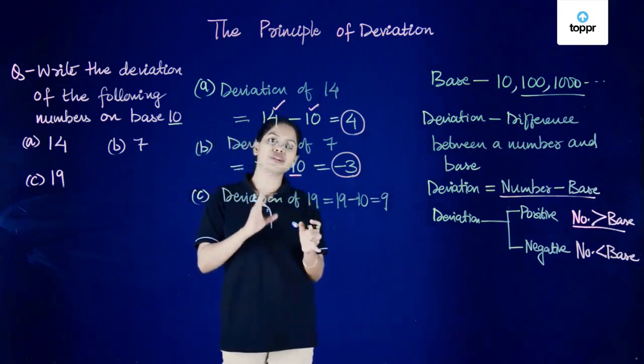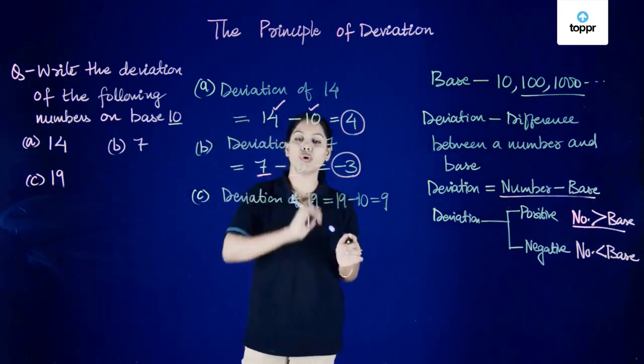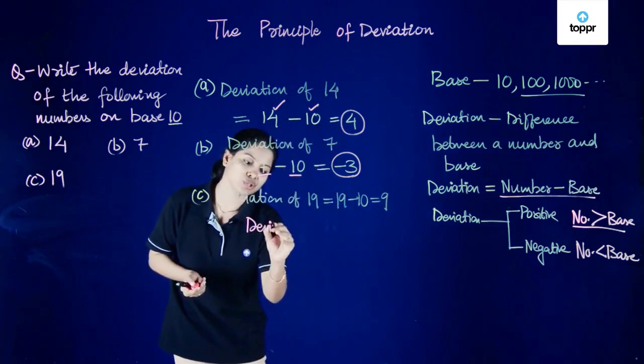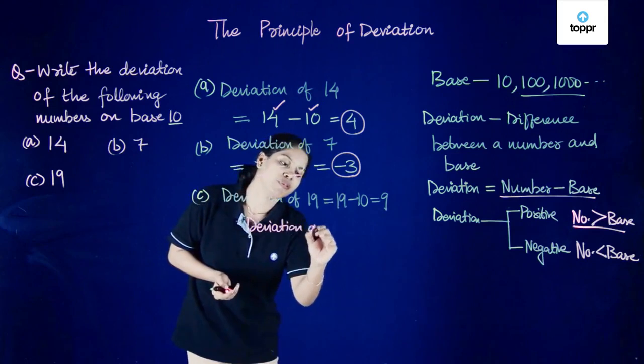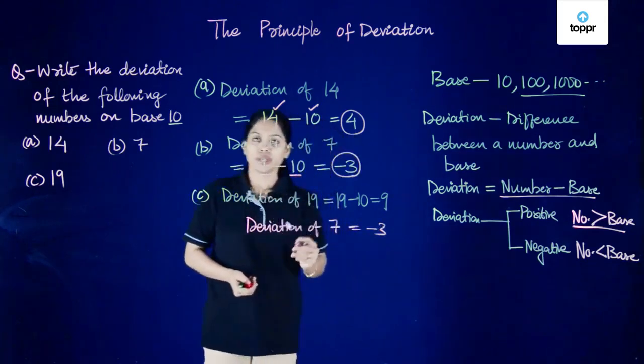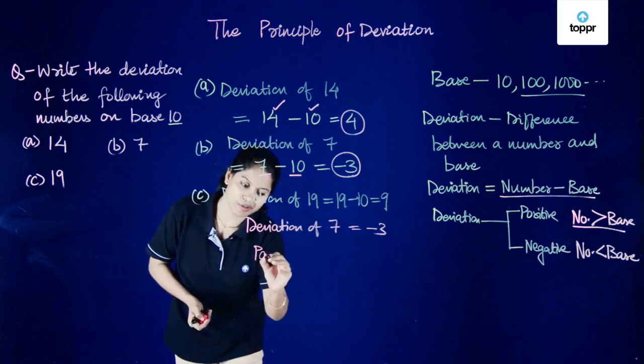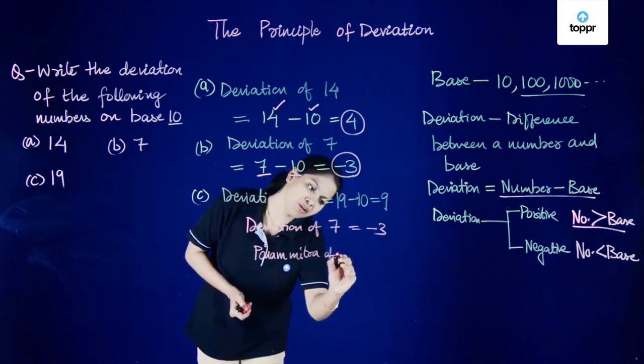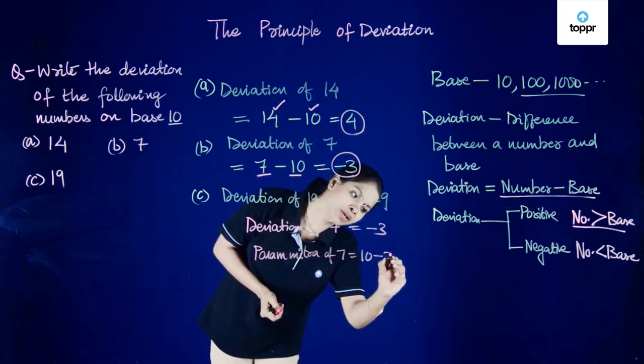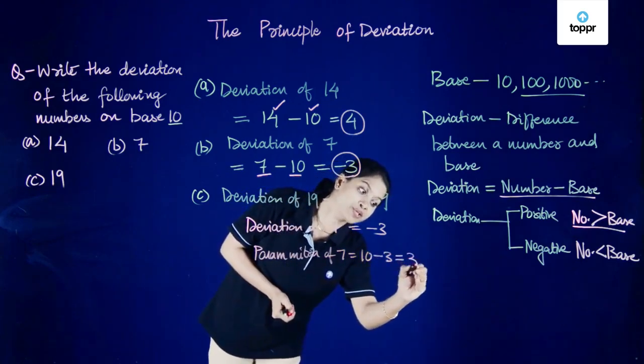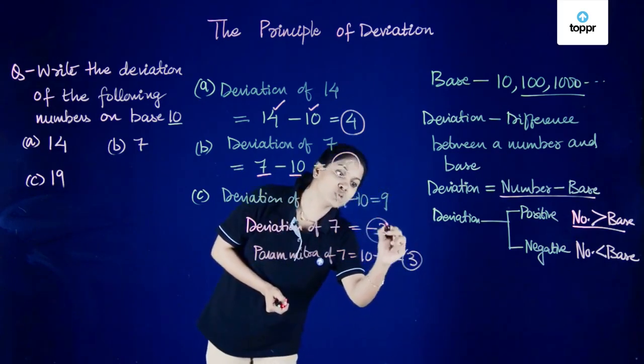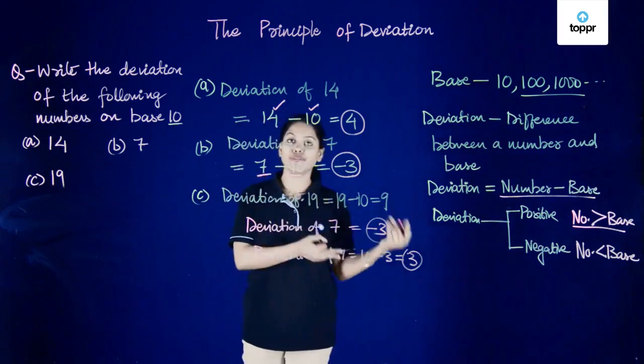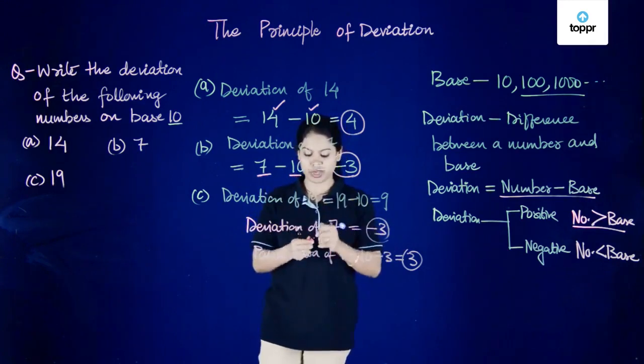Now if we look closely, for example, let's look at the deviation of 7. We just found that the deviation of 7 is equal to minus 3. Now what is the paramitra of 7? Paramitra of 7 is equal to 10 minus 3, that is equal to plus 3. If we compare these two values, we see that deviation can be called as negative of paramitra, or paramitra is negative of deviation.